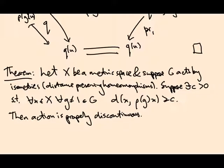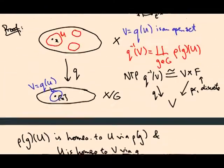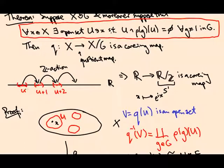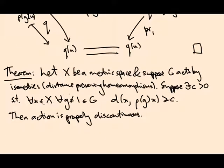The example we saw — translation by an integer on the real line — satisfies the hypotheses of this theorem, because translation is an isometry (it preserves distances), and if I take a point and translate it by a non-zero integer amount, it's always at least some positive constant away from where it started, since I'm translating by an integer amount.